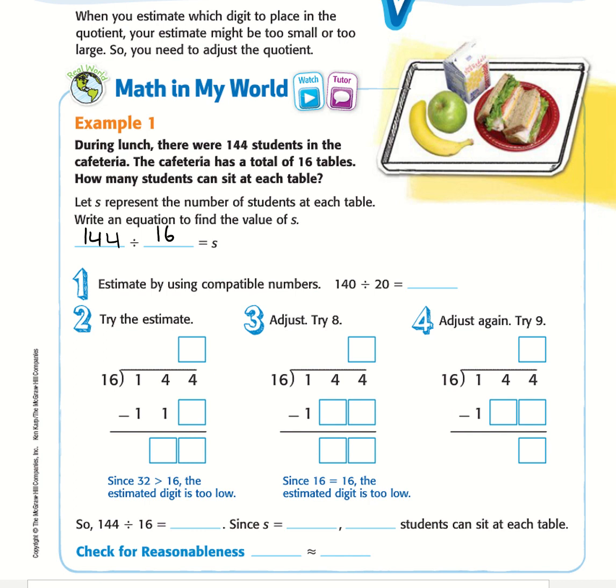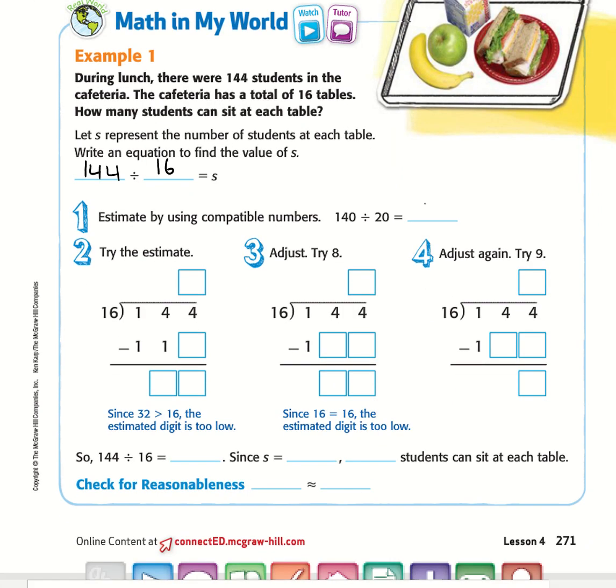We're going to estimate by using compatible numbers. If we have 144, we can change that to 140, and then 16 is going to change to 20. So 140 divided by 20 equals 7.